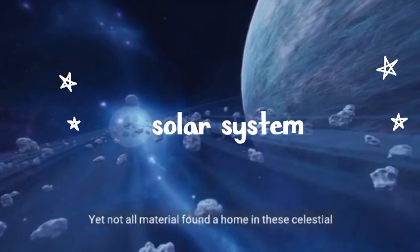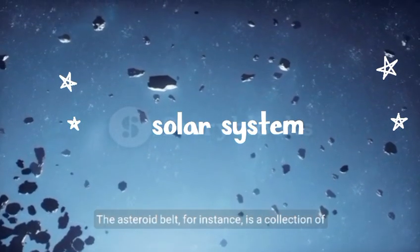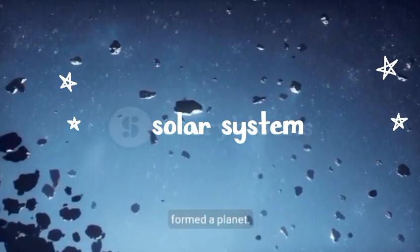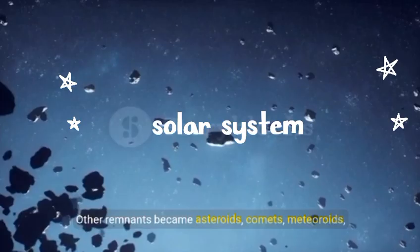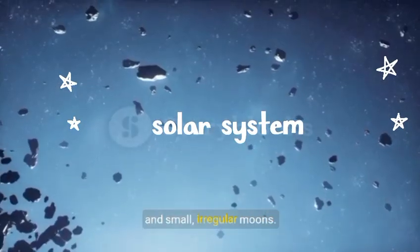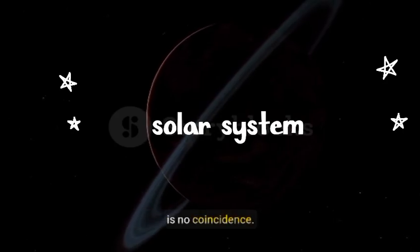Yet not all material found a home in these celestial bodies. The asteroid belt, for instance, is a collection of fragments from this early era that never quite formed a planet. Other remnants became asteroids, comets, meteoroids, and small, irregular moons. The arrangement of these bodies in our solar system is no coincidence.